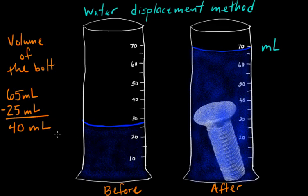That might sound a little strange because we're not used to talking in terms of milliliters for a solid object, but remember that one milliliter equals one cubic centimeter. So 40 milliliters also equals 40 cubic centimeters. So those are a couple ways to find volume.